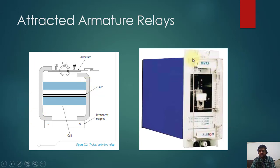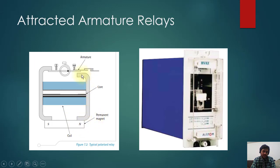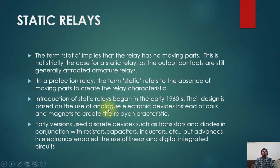This relay shown here is still in use — it is the MVEX, which is a DC supervision relay. Here you can see the core, the coil, and the permanent magnet. When the coil is energized it attracts this contact down and the electrical contact is closed.